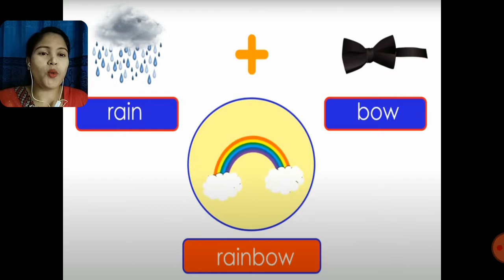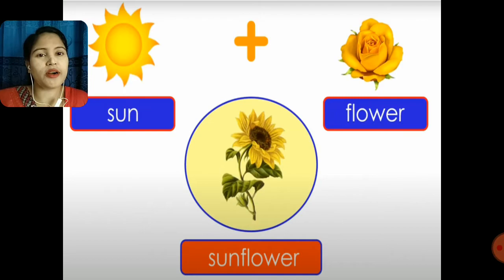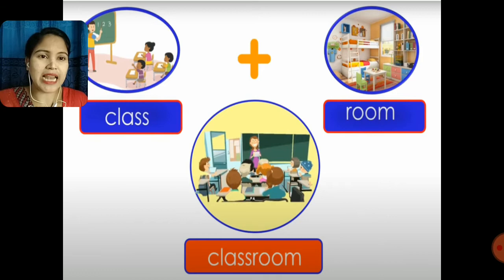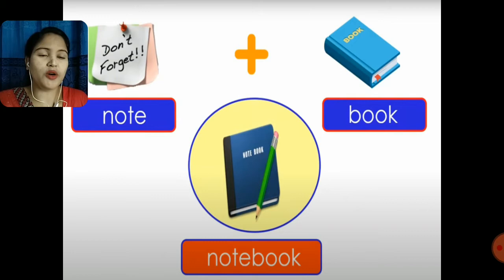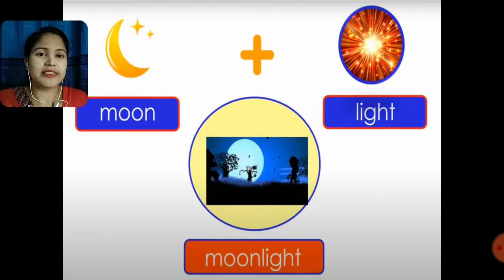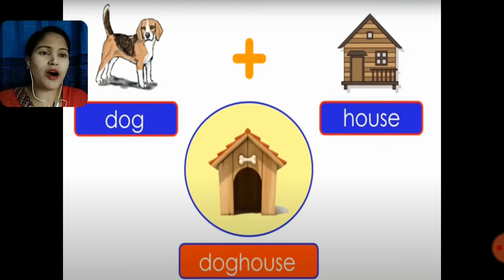Rain plus bow gives rainbow. Sun plus flower gives sunflower. Class plus room gives classroom. Note plus book gives notebook. Moon plus light gives moonlight. Dog plus house gives doghouse.